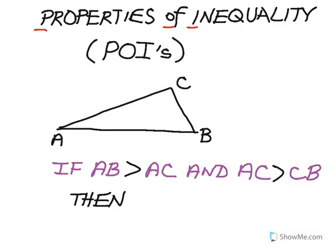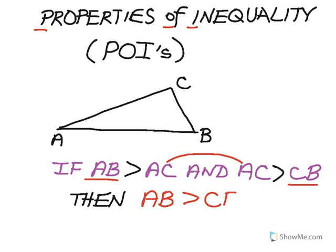This can be applied to a geometric figure as follows. If I have a triangle and side AB at the bottom is greater than AC — so the length of AB is greater than AC — and then AC is greater than CB, what can I conclude? I'm comparing AC in both of these. AB is bigger than AC, and AC is bigger than CB. So obviously side AB must be greater than side CB. Very logical.